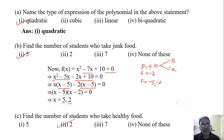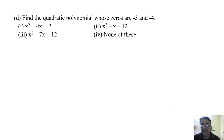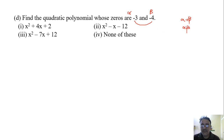Now the third question: find the quadratic polynomial whose zeros are −3 and −alpha. Take these as your two zeros. We need to find the sum of zeros and the product of zeros. The sum of zeros is −3 + (−5) = −7, and the product of zeros is (−3) × (−5) = 12.